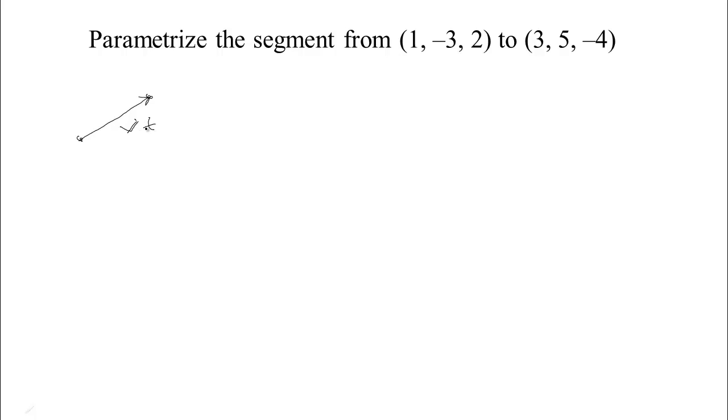We could make that longer or shorter by multiplying it by the parameter t. So when t is 0, the vector has no length, and when t is 1, the vector would have its full length. And then we can add that to a vector that would be our starting location.